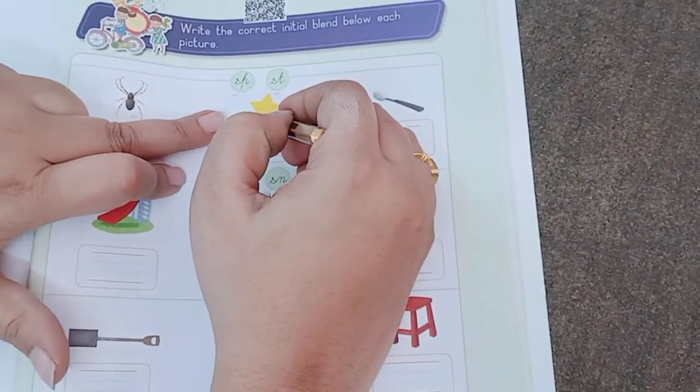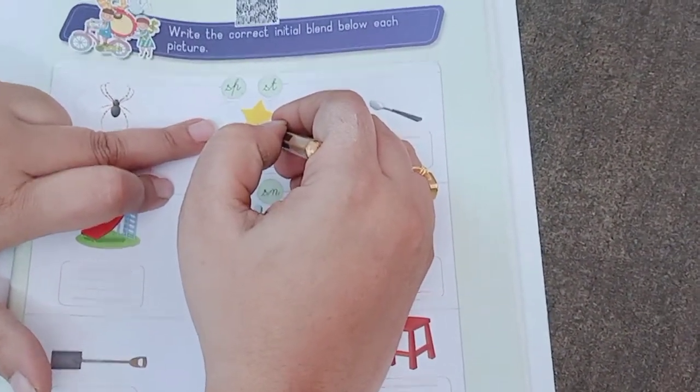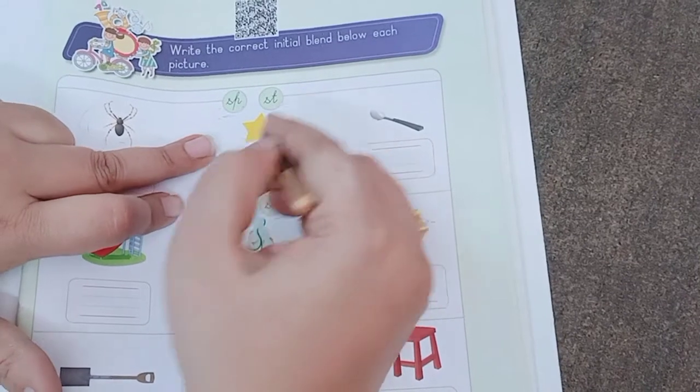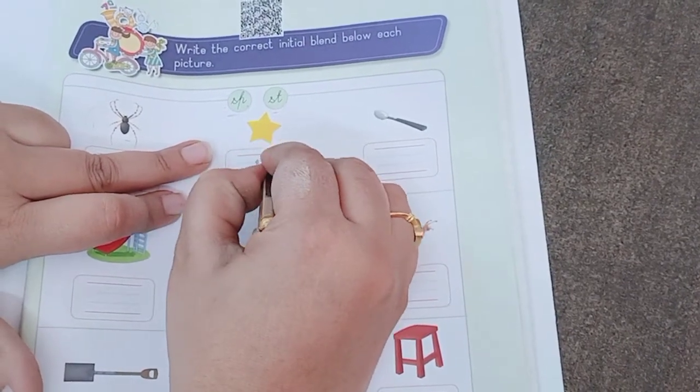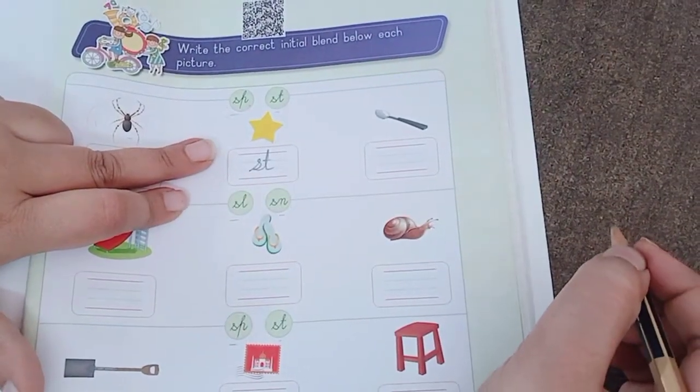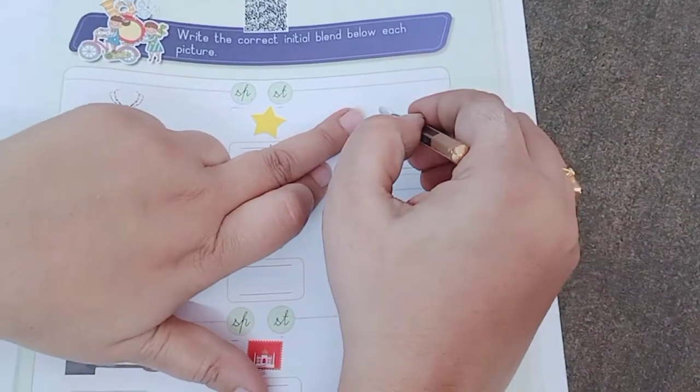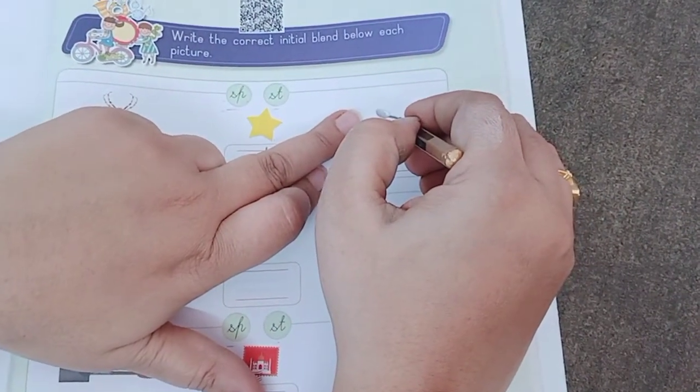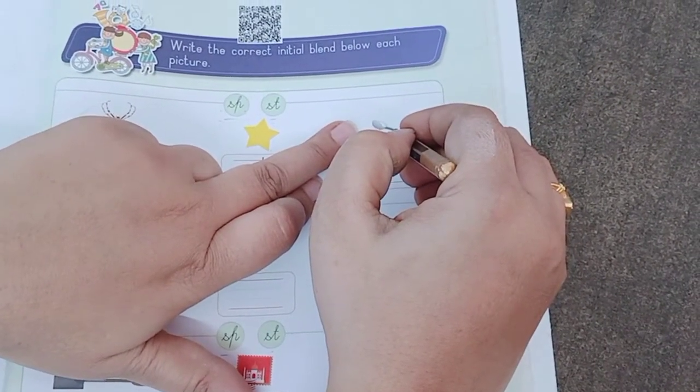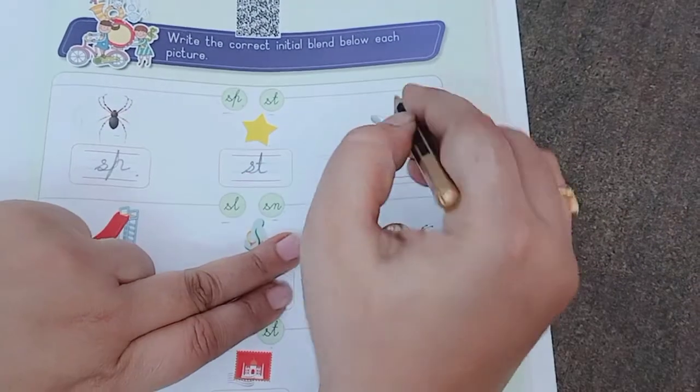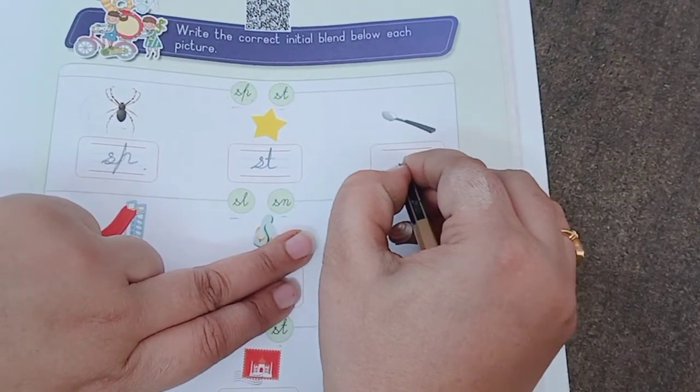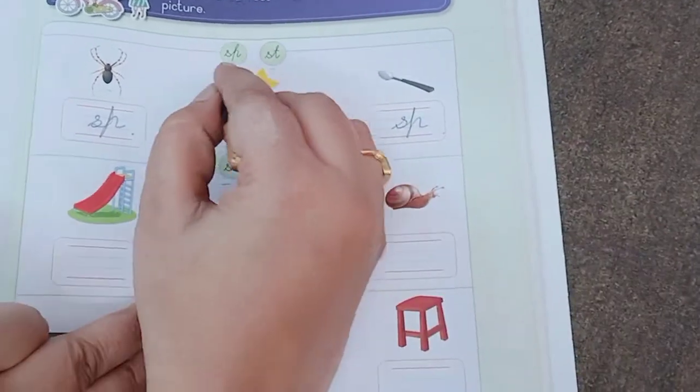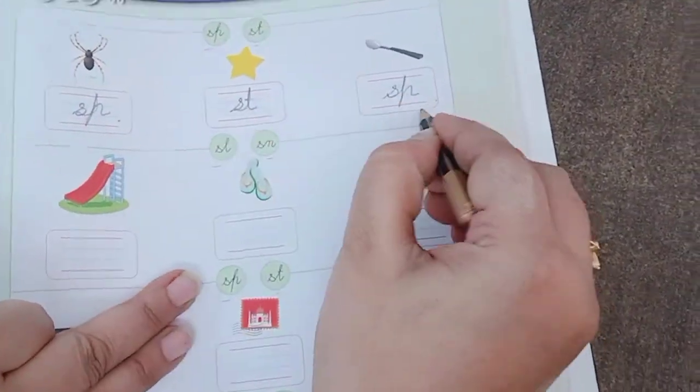This is star. ST, S and T. So we will write ST. This is spoon, SP. SP, spoon, first sound is SP, S and P. So we'll use S again, S and P. SP, ST, SP.